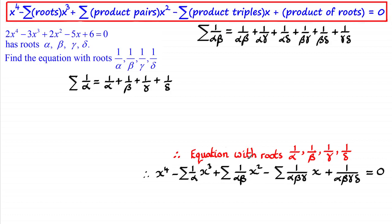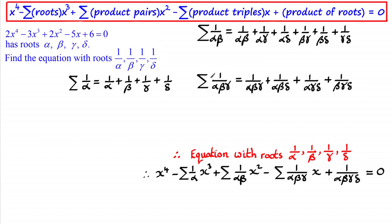Sigma(1/αβ) represents the sum of the product pairs of roots. Next, we have minus the sum of the product triples of those roots times x, given by sigma(1/αβγ), which is the sum of reciprocal terms where we have the product triples of these roots. And lastly, we have the product of all the roots — multiplying these new roots together gives us the final term. So that's our equation that we've got to head towards.